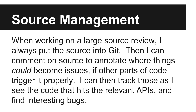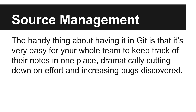Before we wrap up, let's talk about some tips and tricks. When I'm doing a large source review, I always pull the source into a Git repository. Then I can modify the source to annotate where things could potentially become issues if triggered in specific ways by other pieces of code, and track those to see if anything could trigger them elsewhere. The nice thing about Git is that your whole team can keep track of their notes in a single place, which cuts down on the work required and increases the number of bugs you'll find.